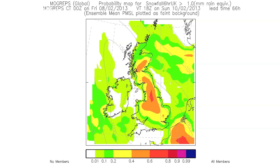To give you an example, this is a chart for Sunday afternoon showing the chance of about a centimetre of snow falling anywhere in the UK. The orange colours give you a sense of where there's a reasonably high probability of snow, red is the highest probability, and greens and whites are much lower probability.